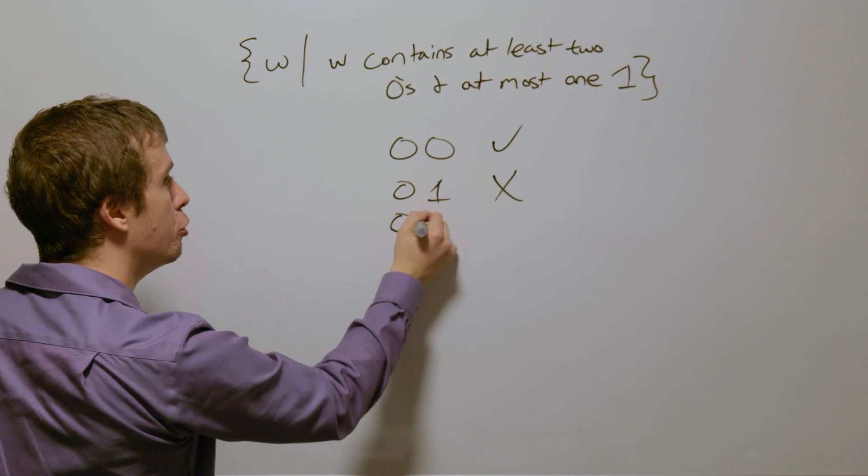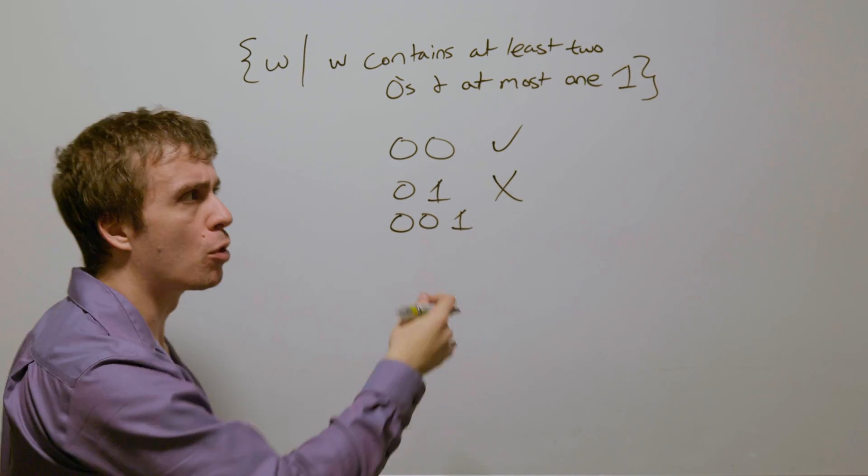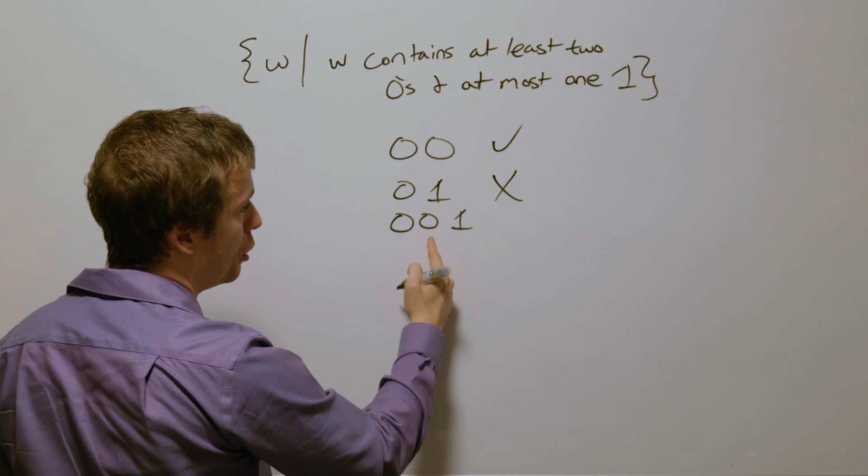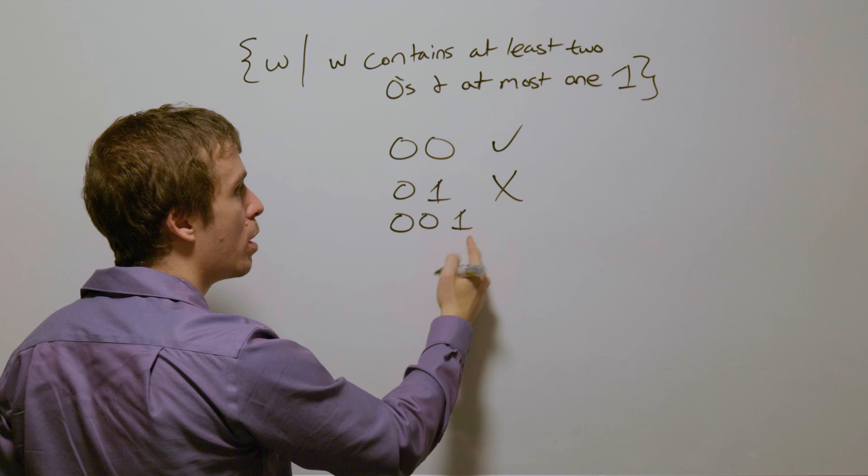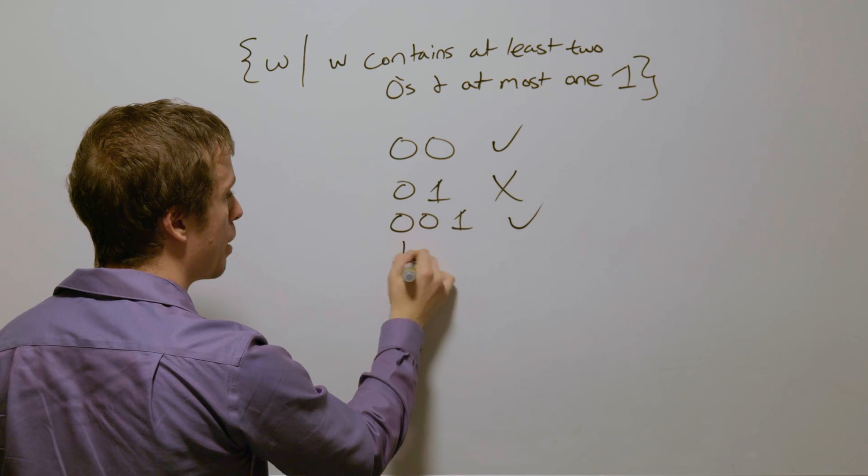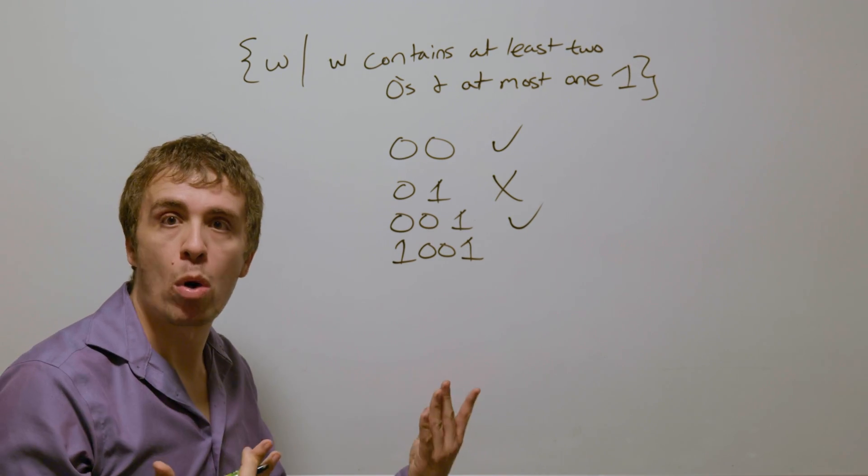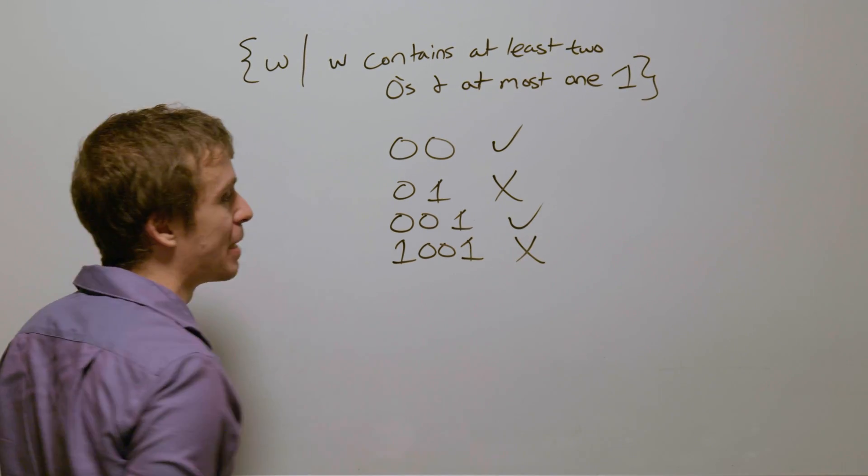If we have two zeros in a one, by the way the zeros don't have to come before one, it doesn't say anything like that, but this one has two zeros and at most one one, so it should be accepted. If we have one zero zero one, it satisfies the zero requirement but not the one requirement, and so therefore it should not be accepted.